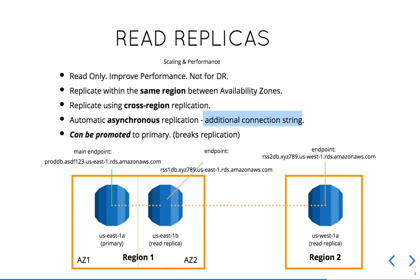Finally, read replicas can be promoted to primary; however, this will break your replication. In the event of a disaster where you lose a complete region, you can take the secondary region's read replica and promote it to your primary database.